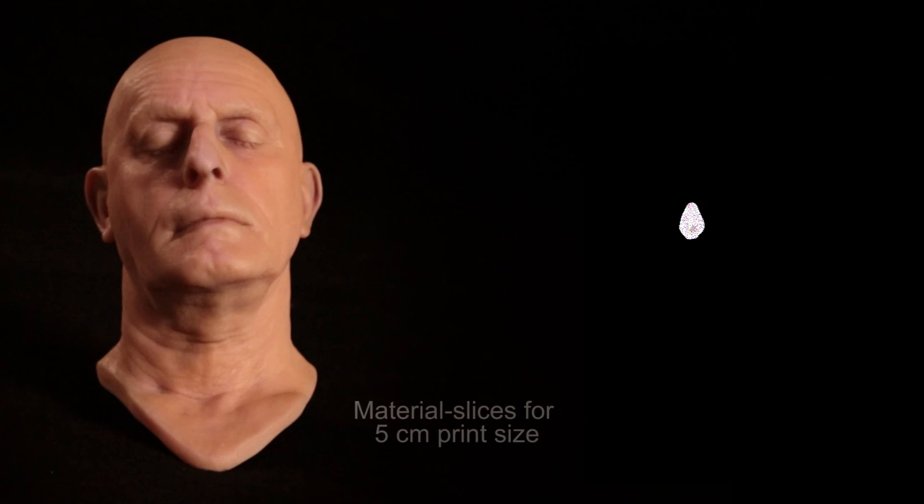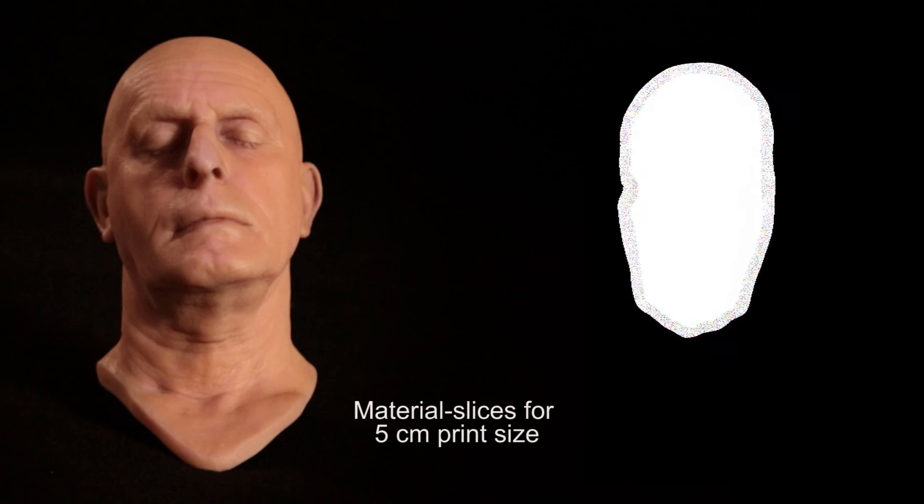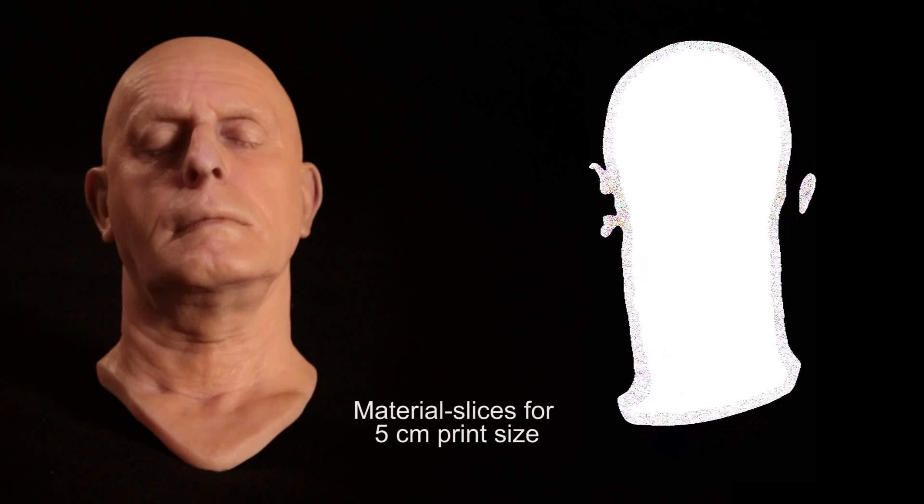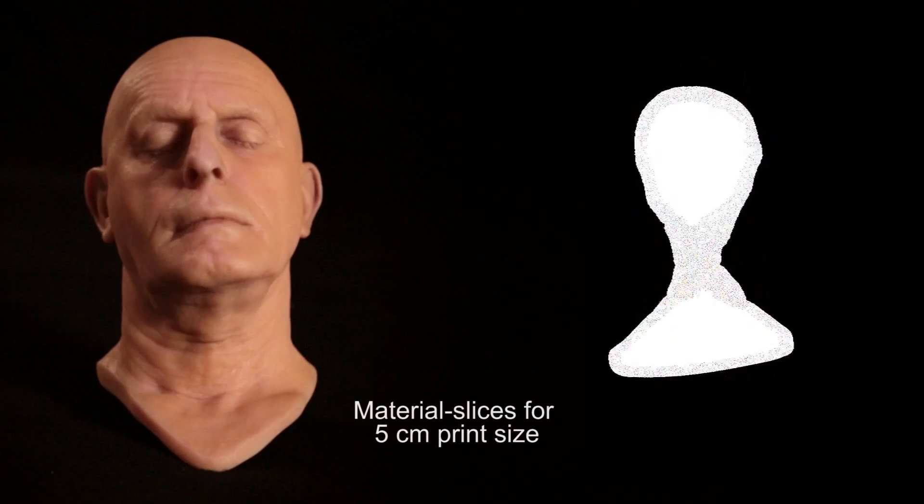Our approach consists of two main steps. We construct multiple layers within the object and assign printer tonal values according to the input texture. Each layer is then halftoned independently using an error diffusion approach.